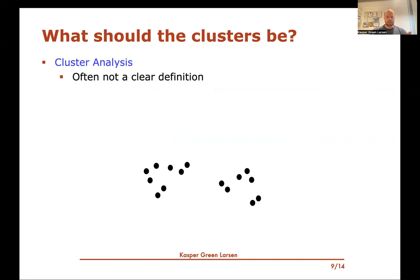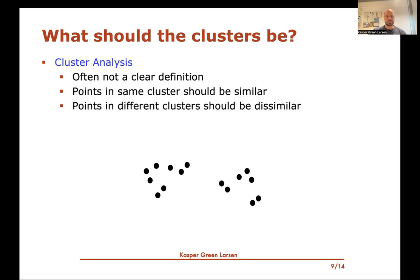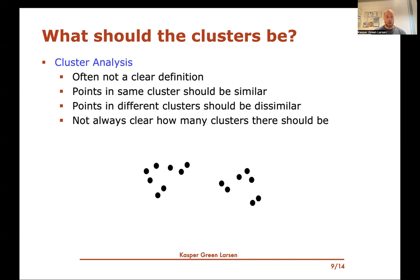You should ask yourself: if I have a data set of points, what should the clusters be like? It's not always easy to define what you're looking for. In general, when doing clustering, you want points in the same cluster to be similar — for whatever definition of similar you're interested in — and points in different clusters to be dissimilar. It's also not always clear how many clusters you need. Looking at a small example, there's a natural way to cluster into two clusters, but four clusters or even six clusters could also be reasonable.